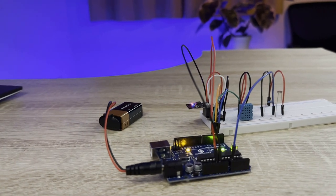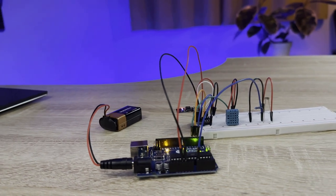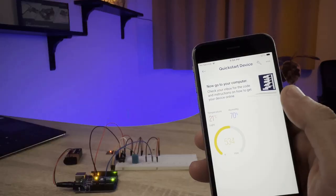Learn about the Internet of Things with a project that lets you monitor the temperature, humidity, and light level of a room from an app on your smartphone.